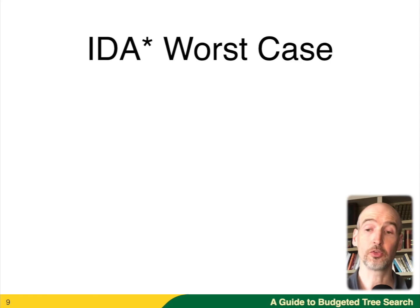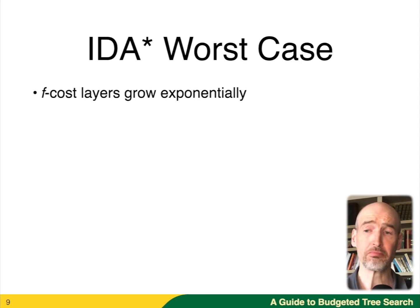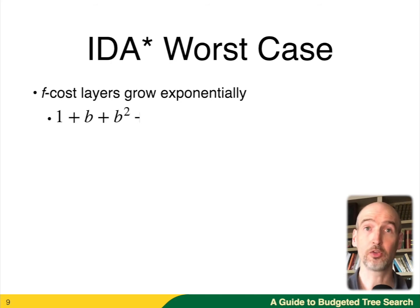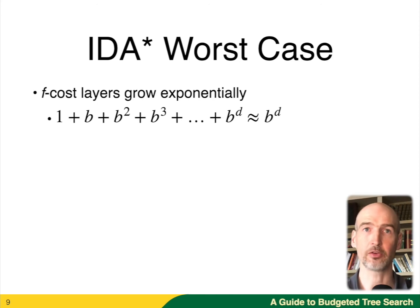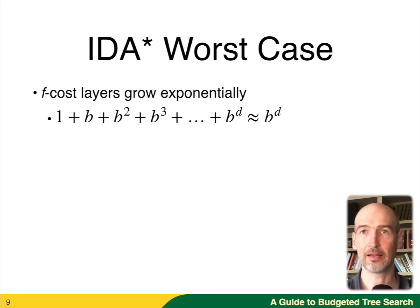IDA* assumes that there will be exponential growth. If you start with one node at the root, this is going to grow B nodes, B squared, B cubed, all the way up to B to the D, where B is the branching factor. When you grow exponentially like this — multiplying by a factor of B — then the overhead of doing the multiple iterations is amortized away and is less than a constant factor.